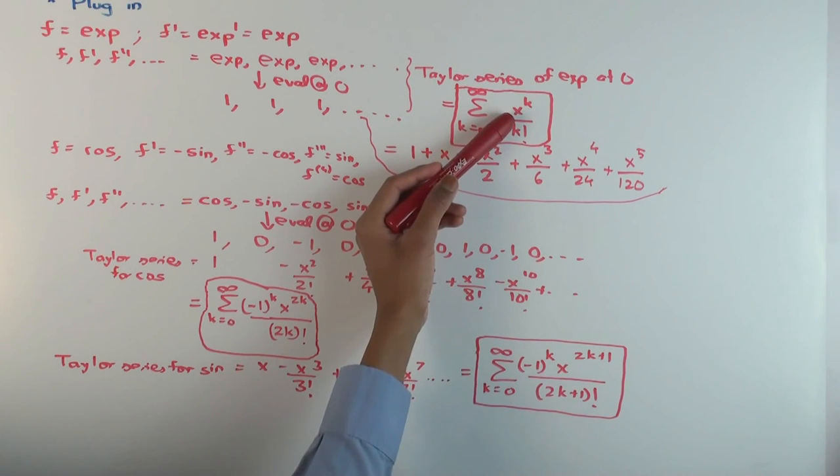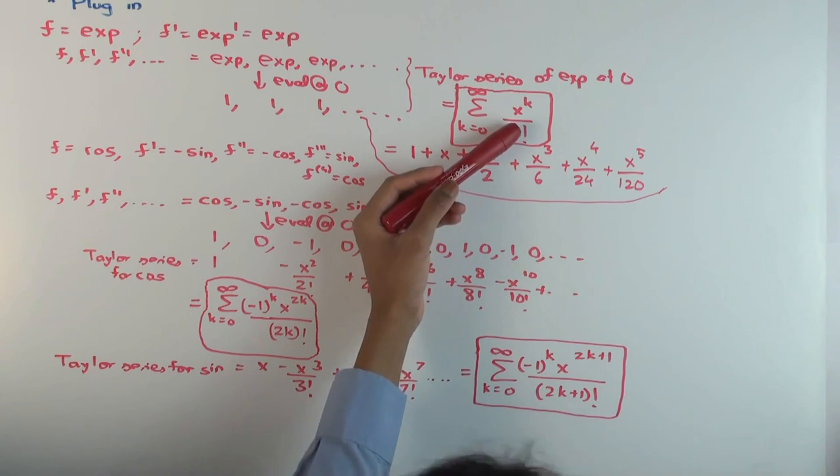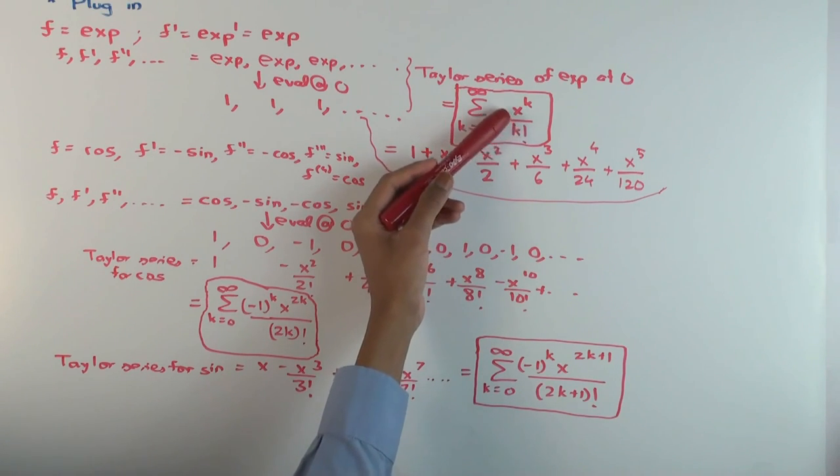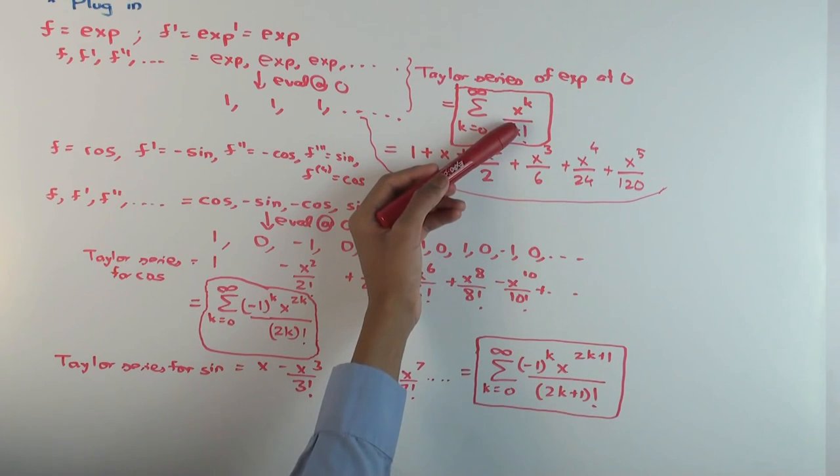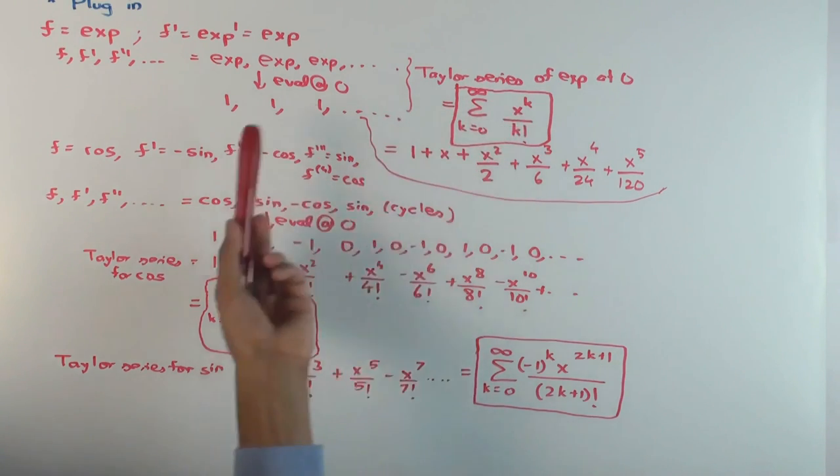So if you actually plug in any x and you calculate this sum as a series sum, it actually equals e to the x. The series sum equals e to the x. That is not a fact which we have yet reached.